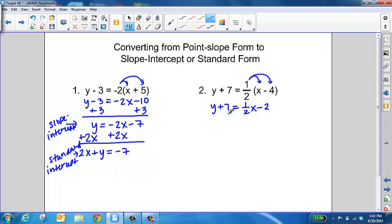And then just like with number 1, we want to first get this into slope-intercept form by isolating that y. So we need to subtract 7 from both sides. So we're going to have y equals 1 half x minus 9.